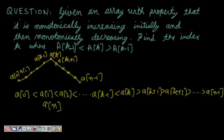Friends, in this question you are asked to find a very interesting thing. You are given an array which has the property that it is monotonically increasing initially and then it is monotonically decreasing. So this is the property that the array has.